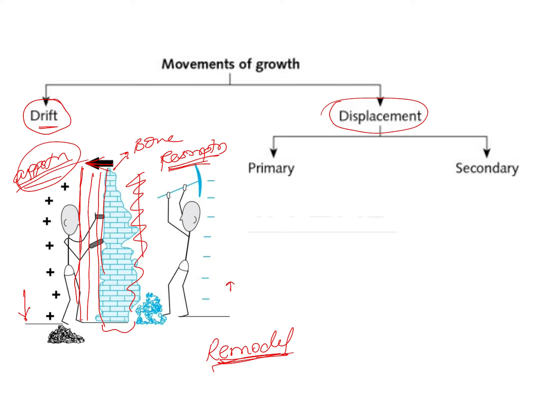If the amount of resorption and apposition is the same, then the thickness of the bone will remain the same — it will only move in the direction of apposition. If the amount of resorption is more than the amount of apposition, then the bone is going to become thinner. So this is drifting.